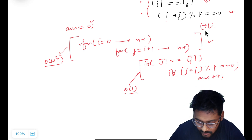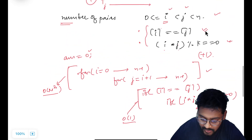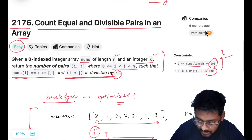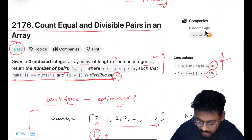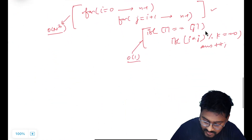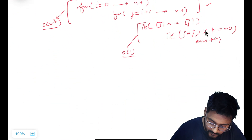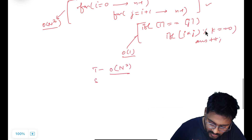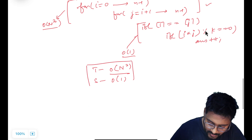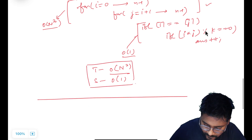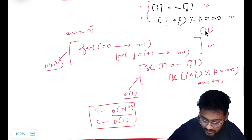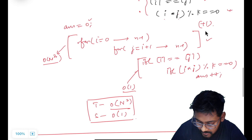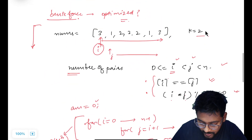Since the constraints are very small with n going up to 100, this won't hamper our time complexity and we can comfortably submit this. This brute force is an O(n²) time solution and we did not take any extra space, so O(1) space.